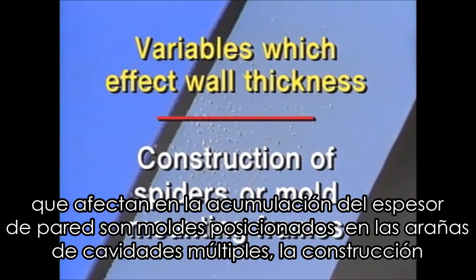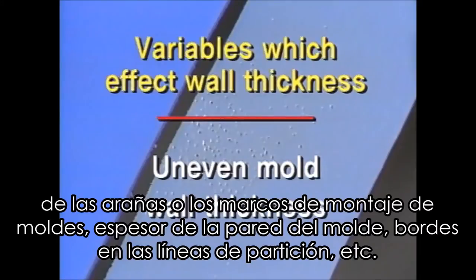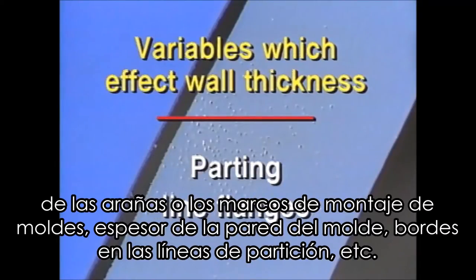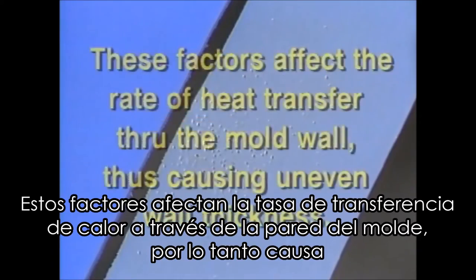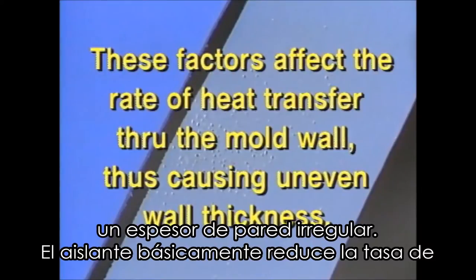the construction of spiders or mold mounting frames, uneven mold wall thickness, parting line flanges, etc. These factors affect the rate of heat transfer through the mold wall, thus causing uneven wall thickness.